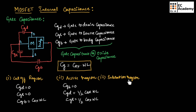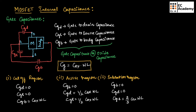The next region of operation is saturation region. In saturation region, the channel depth is maximum at source and zero across the drain. Therefore CGB will be zero, CGD will also be zero, and we get maximum capacitance across CGS — more than 60% of total capacitance. So we take CGS as 2/3 COX WL, and the other two capacitances will be zero.